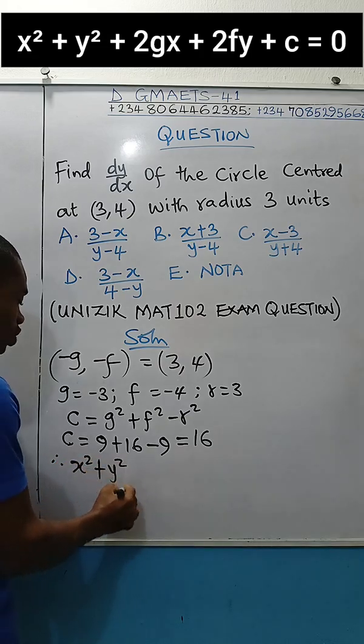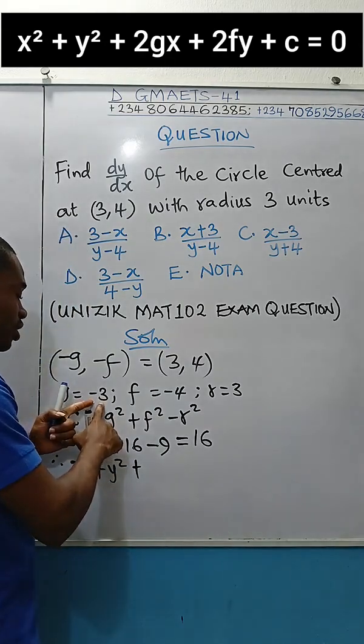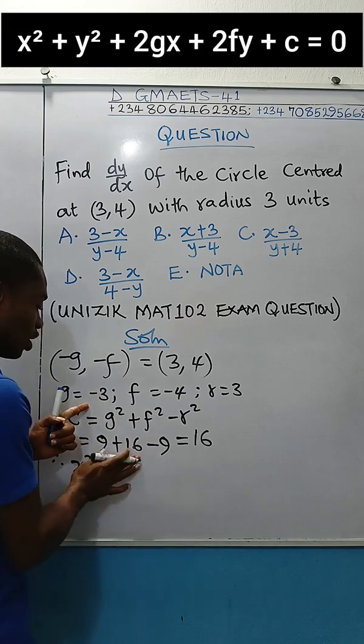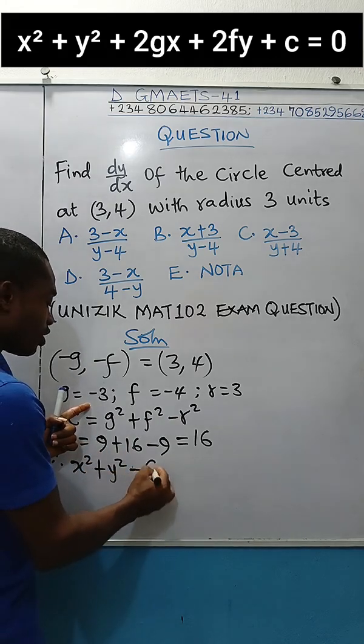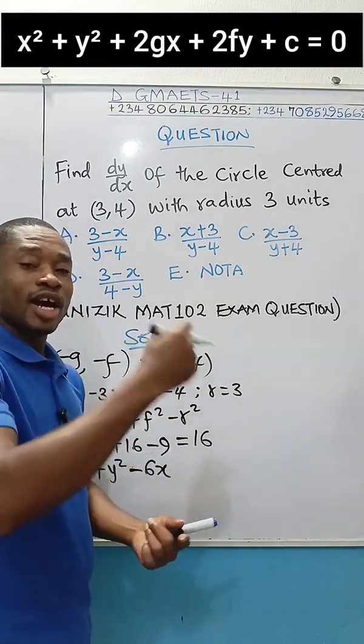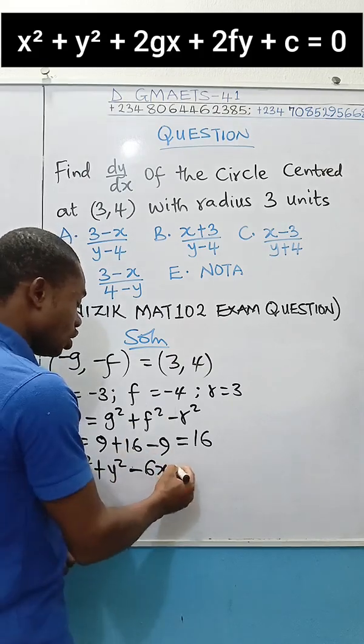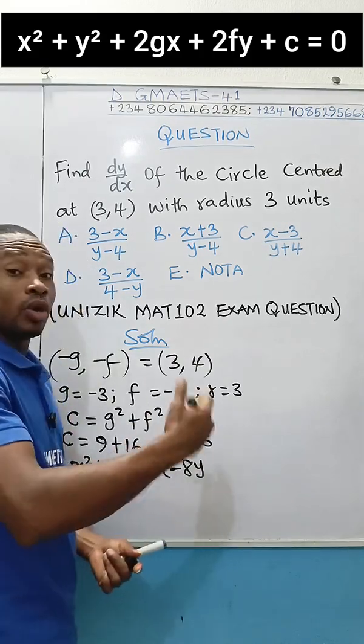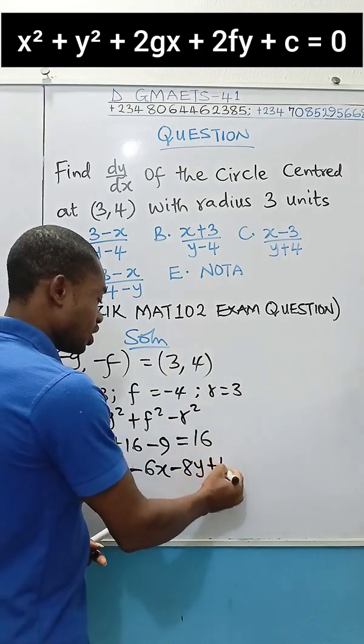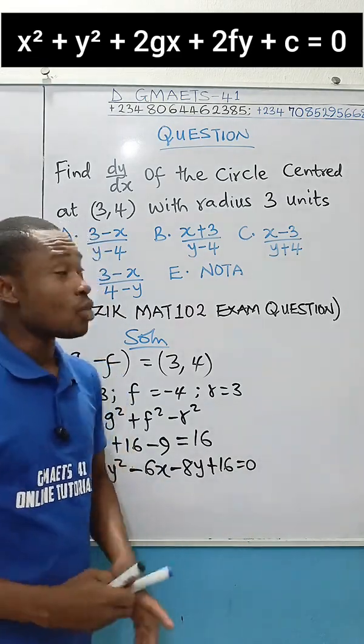Therefore, the equation of the circle is x² + y² + 2gx. And what is our g? Our g is -3. If you multiply it by 2 you are going to get -6, so this becomes -6x. Plus 2fy. 2 times f, our f is -4. If you multiply -4 by 2 that's going to be -8y. Then plus c, our c is 16. Make it equal to 0. This is the equation of the circle.